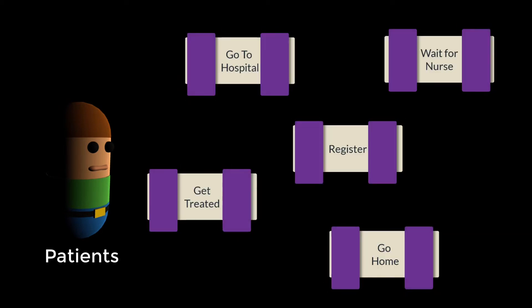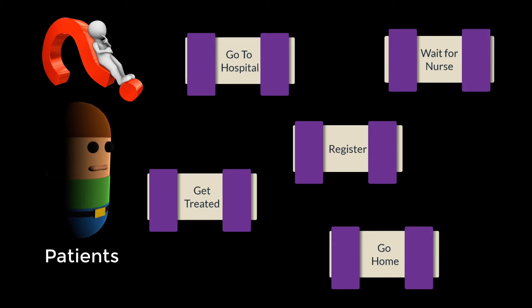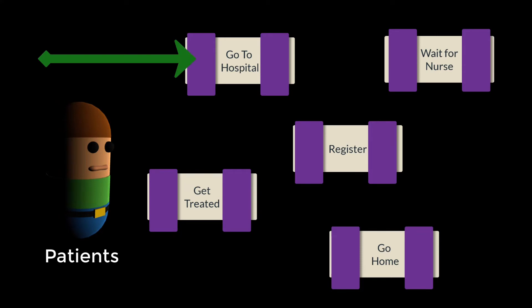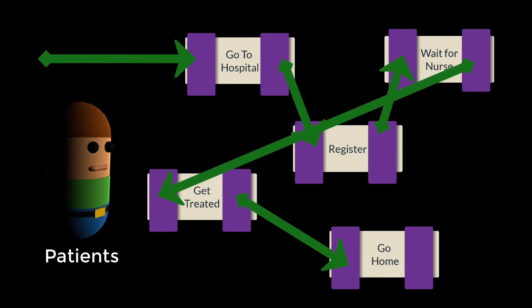In GOAP, each of these actions exists as a single and complete task, accompanied by the agent simulating some event. If you were to put together a plan for the agent to take to get through these actions, what would it be? Take a moment to consider it. You probably came up with something similar to this: go to hospital, register, wait for nurse, get treated, and then go home. Definitely a legitimate plan.